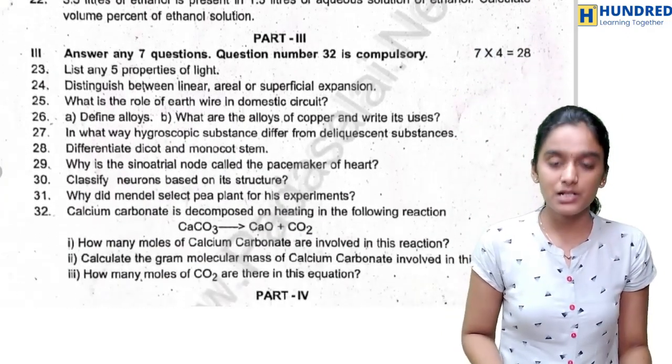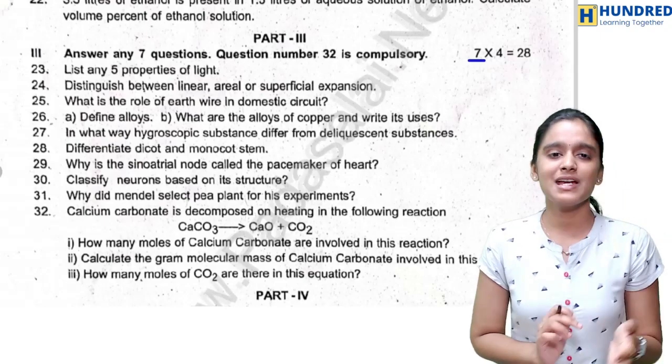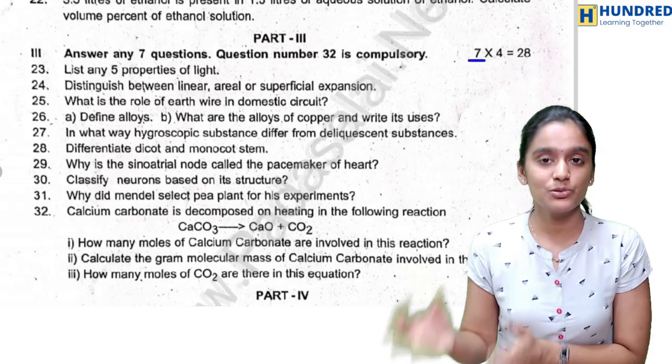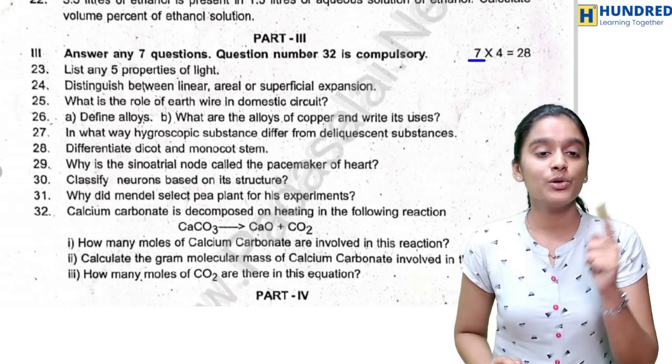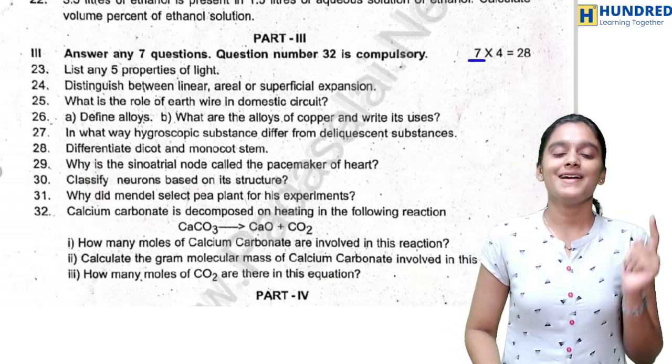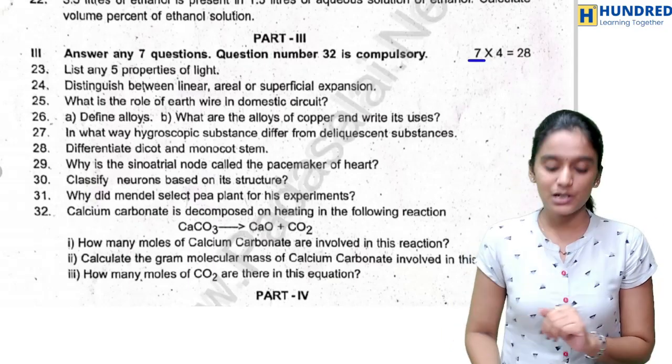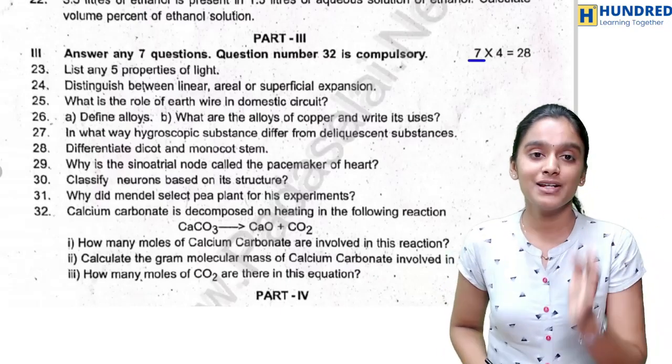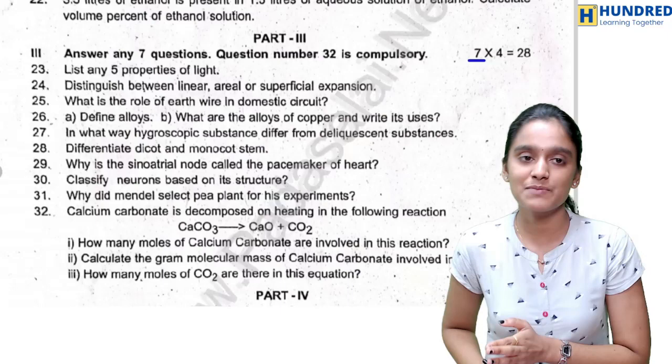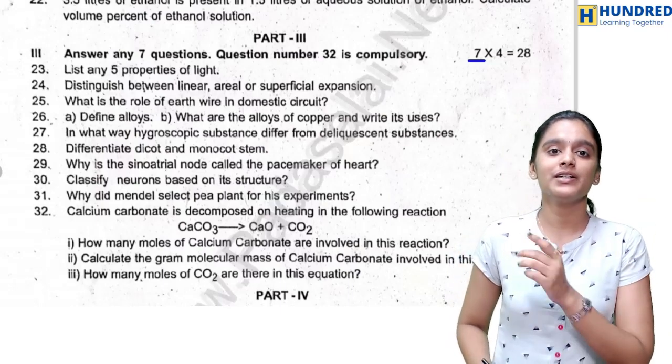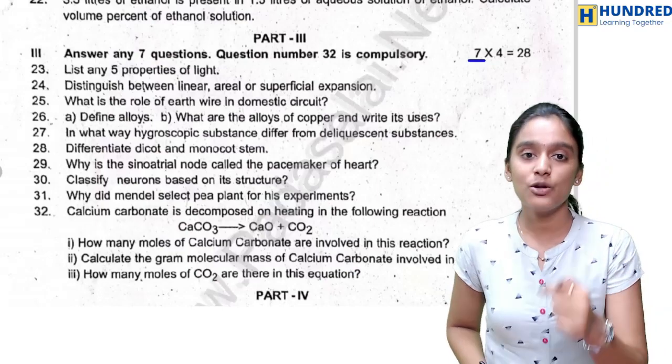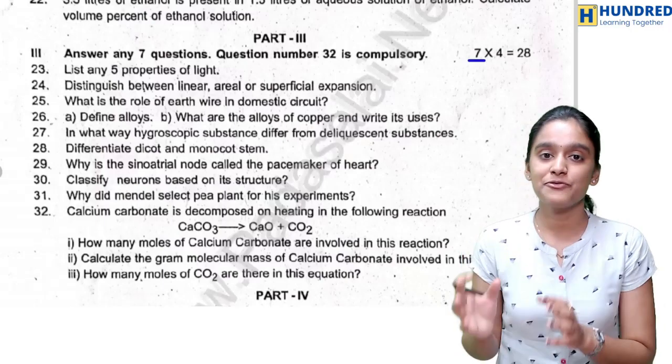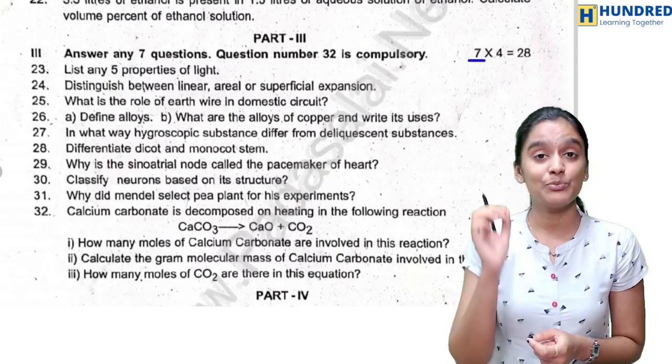And in Part 3, you have to attend 7 questions out of again 10 questions, and this is going to give you 4 marks per question, so totally 28 marks. And in this part you have a compulsory question, which is question 32. Let's see what are the questions: list any 5 properties of light, distinguish between linear, aerial and superficial expansion, what is the role of earth wire in domestic circuit, define alloys, what are the alloys of copper and write its uses, in what way hygroscopic substances differ from deliquescent substances.